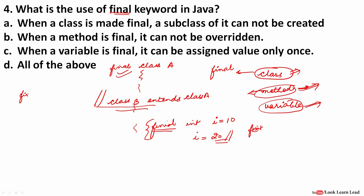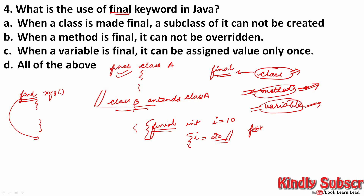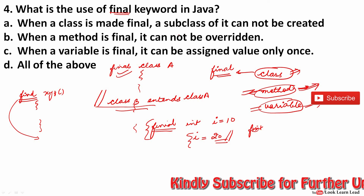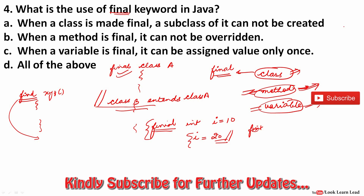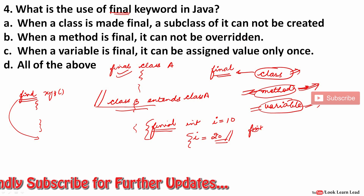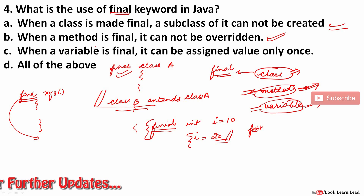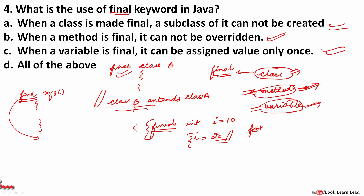To illustrate: a final method named XYZ cannot be overridden in the child class because it is final — final means it cannot be changed. When a class is final it cannot be inherited; when a method is final it cannot be overridden; when a variable is final it cannot be assigned any other value. So all of the above are usages of the final keyword in Java.